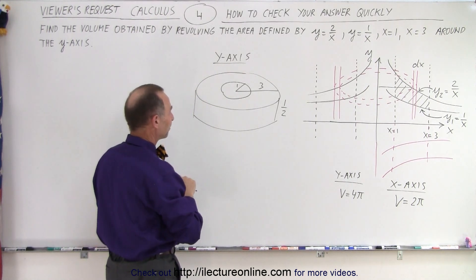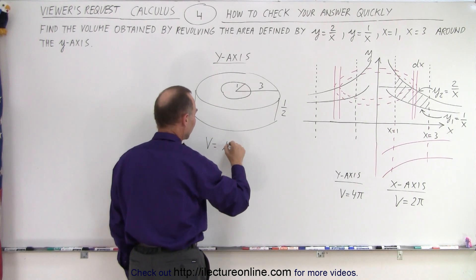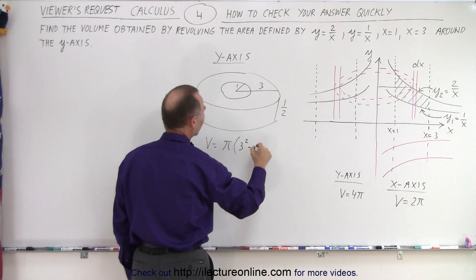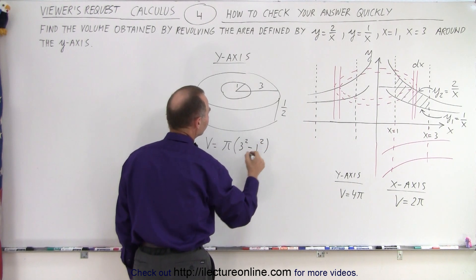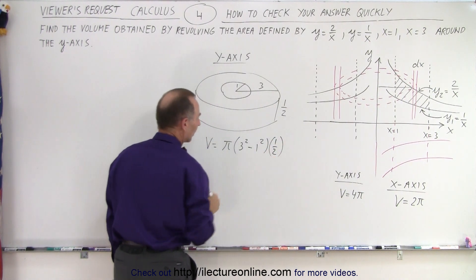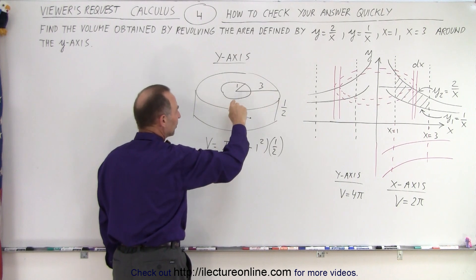So let's find the volume of that. The volume is equal to the area, which is π, times the outer radius, which is 3 squared, minus the inner radius, which is 1 squared, times the thickness, 1/2. So again, that would be the area of the base.